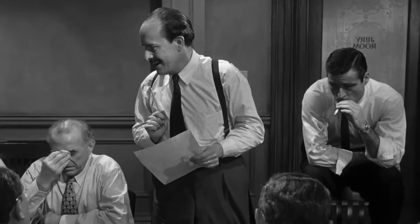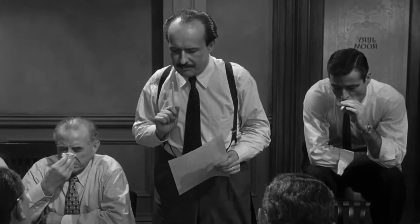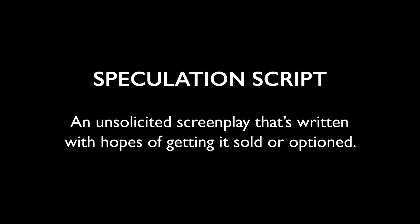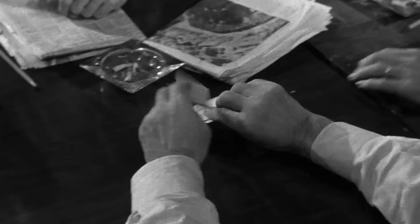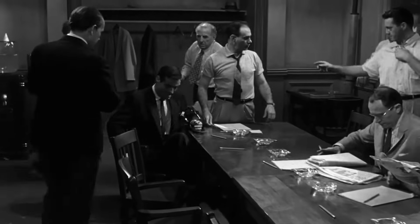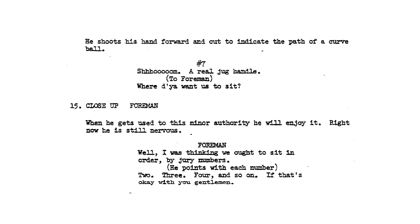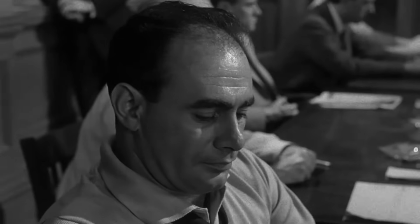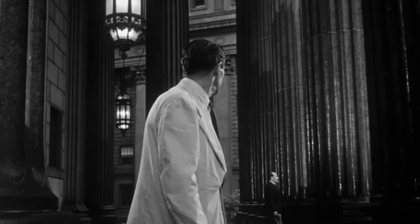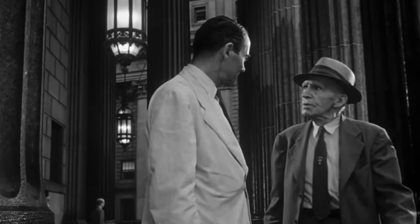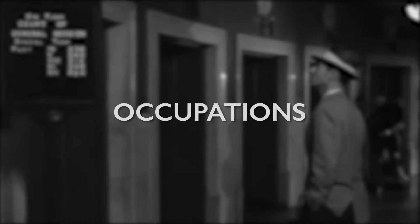So a question suddenly occurred to me: how would you write 12 Angry Men as a spec script? A speculation script is an unsolicited screenplay written with the hopes of getting it sold or optioned — meaning it's all about conveying the story through the written word. In the film, they cleverly have everybody sit in order by juror number, but in a screenplay we don't have the benefit of seeing the actors. We can quickly distinguish the foreman because of his title, and juror number 8 because he's the only one that votes not guilty in the beginning. The screenplay cleverly gives us exposition on the characters' occupations.